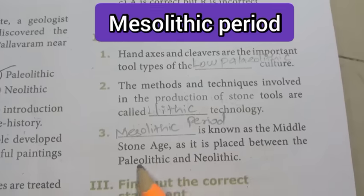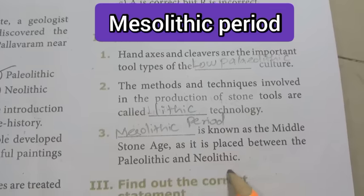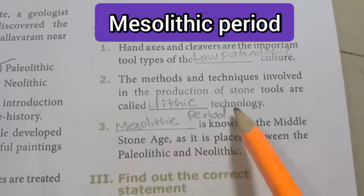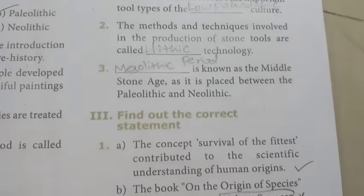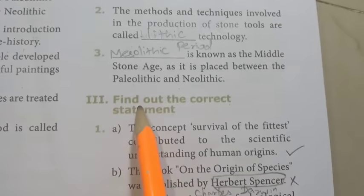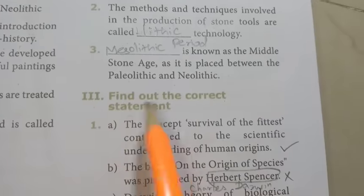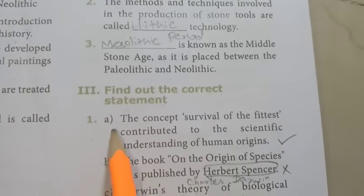Third one: dash is known as the Middle Stone Age as it is placed between the Paleolithic and Neolithic. Answer is Mesolithic period.